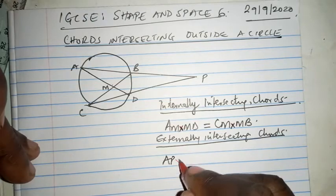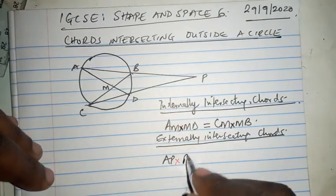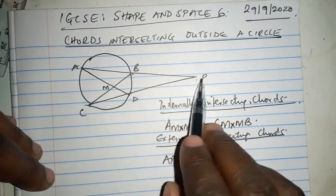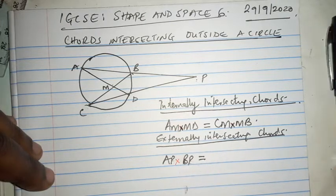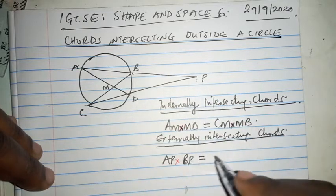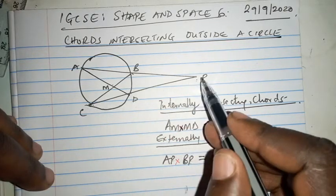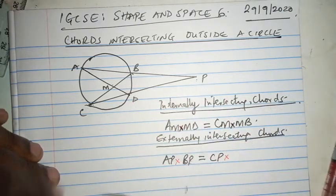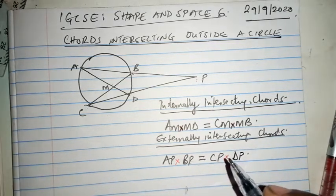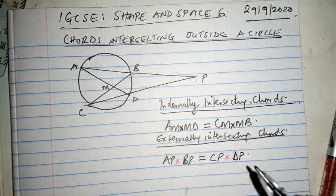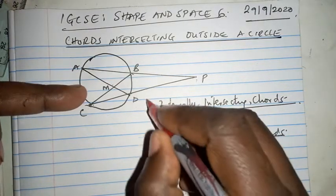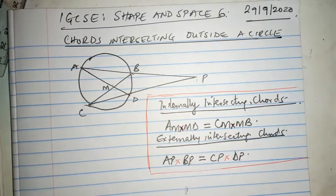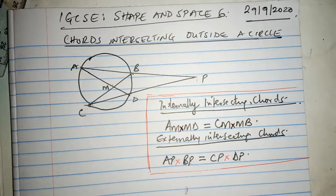Multiplied by the external part BP. In other words, AP times BP equals the whole line again CP times the external part DP. And that is it. There is nothing more, nothing less, but this is very important especially when you're dealing with chords that intersect inside or outside a circle.